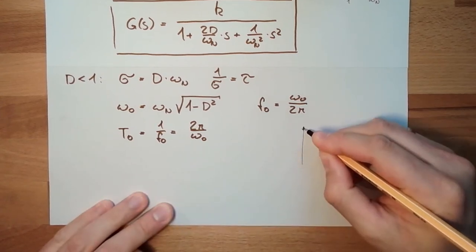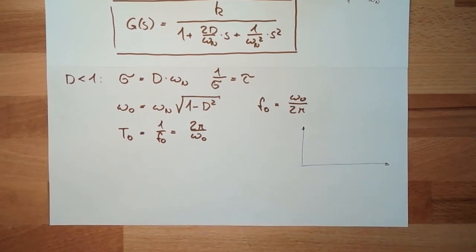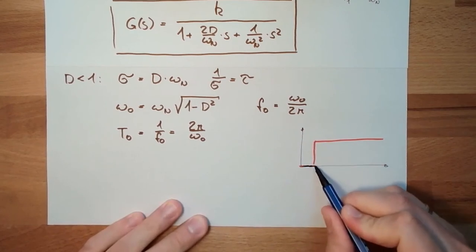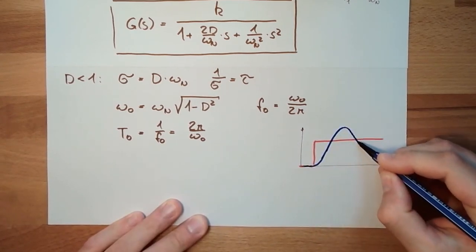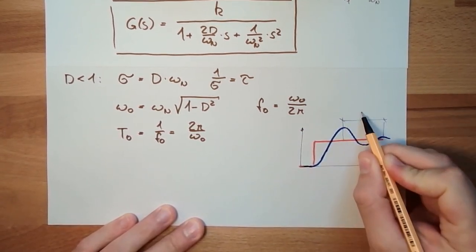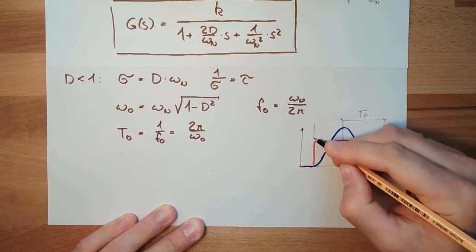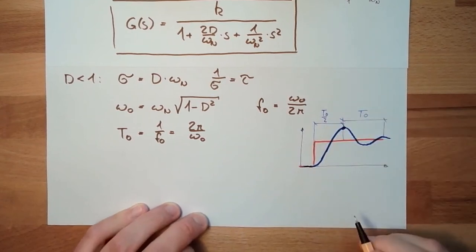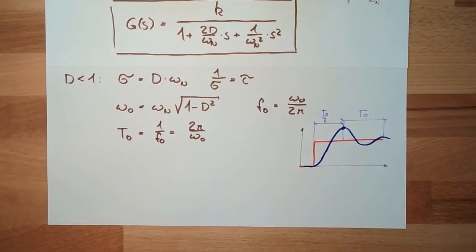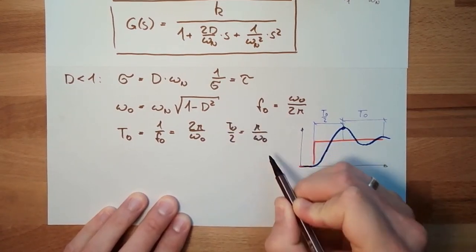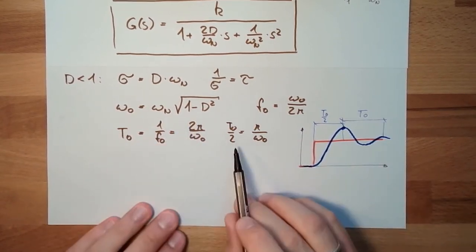Here we have the input, and the output goes up and then swings. This period is T0, and the time to the maximum — the first overswing — is half of that, which is T0/2, or equivalently π divided by omega_0. This is the time it takes to reach the first overswing.